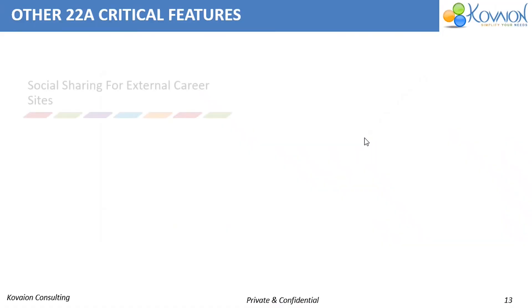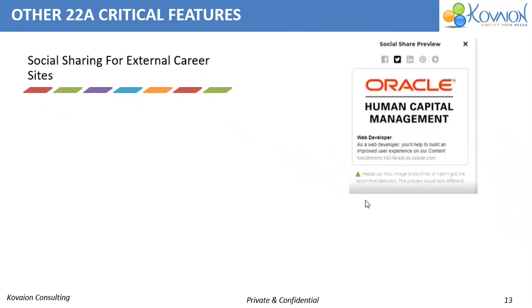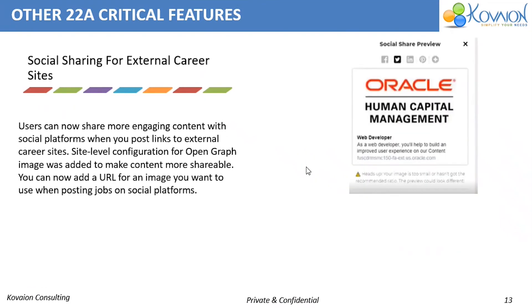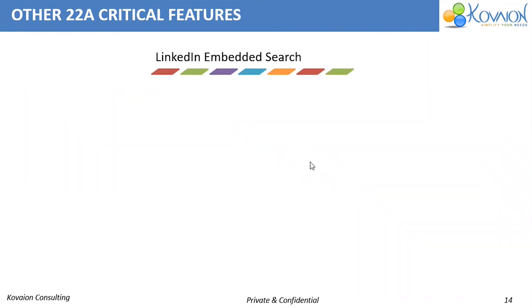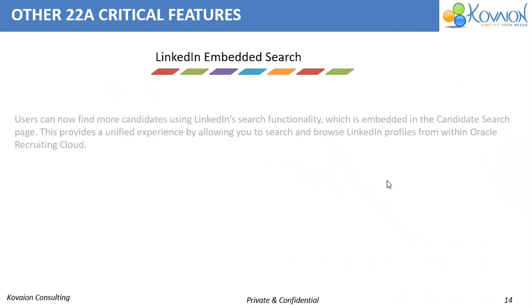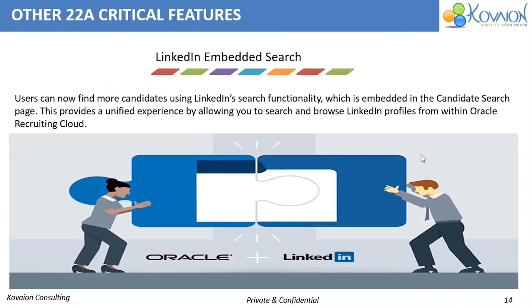Moving on to other 22A critical features: Social Sharing for External Career Site — we can now share engaging images from Image URL with this new feature. The next feature is LinkedIn Embedded Search, where we can now search for the appropriate candidate for an appropriate job using LinkedIn, which is embedded within Oracle HCM Cloud.